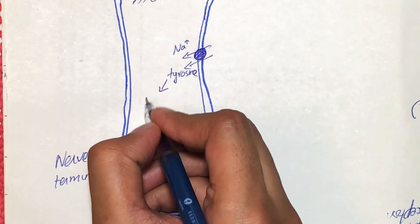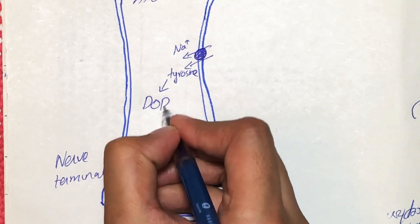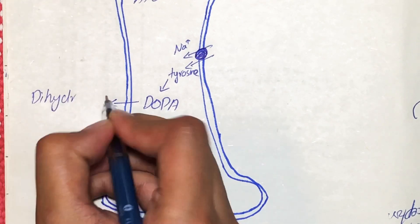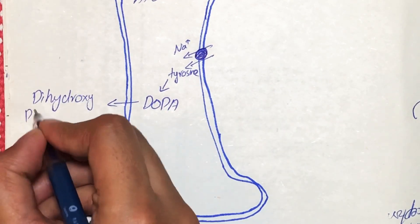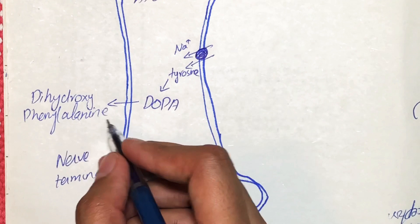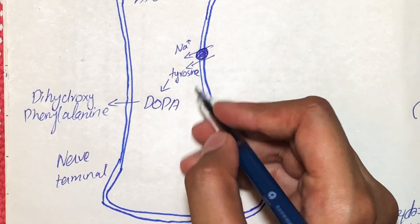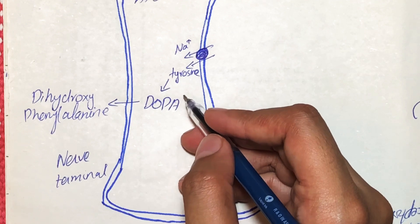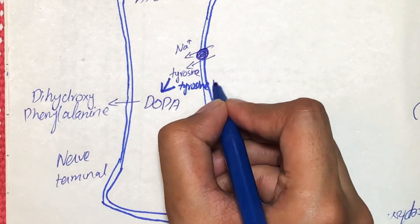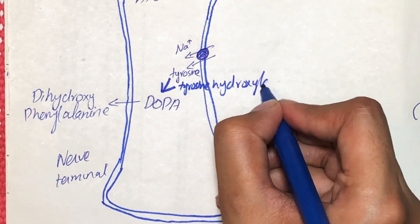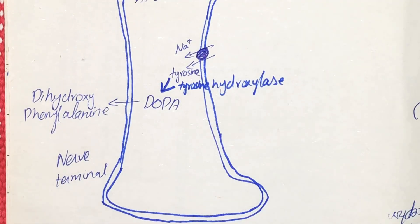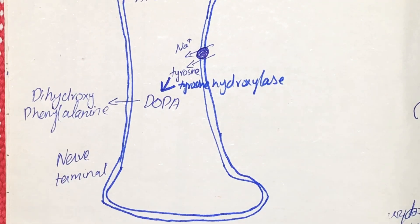When tyrosine comes inside the neuron, it is converted into DOPA, which stands for dihydroxyphenylalanine. This conversion is carried out by the action of an enzyme called tyrosine hydroxylase, which converts tyrosine into DOPA.